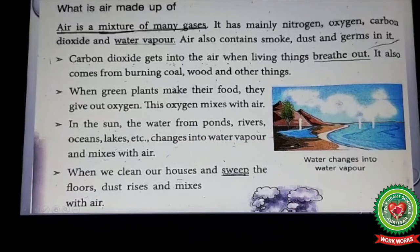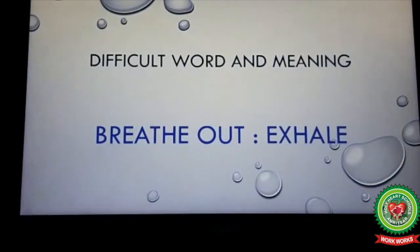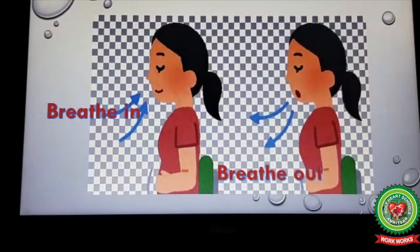Carbon dioxide gets into the air when living things breathe out. Underline 'breathe out' and write its meaning: exhale. It also comes from burning coal, wood, and other things. Carbon dioxide is released into the air as human beings breathe out, and it is the most common gas produced by burning wood and coal.